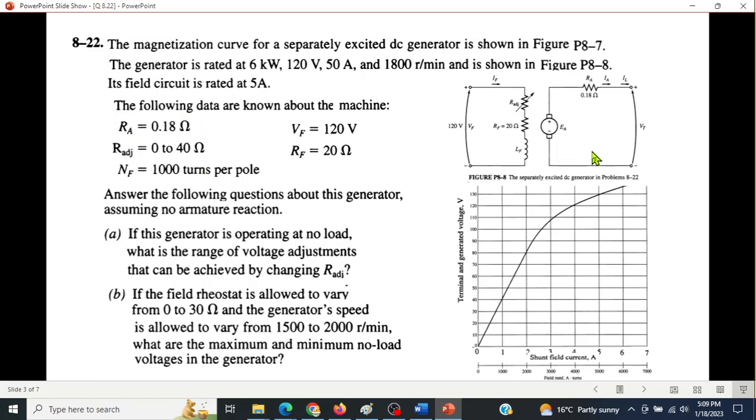Field current is given, and these are some of the parameters. Important parameter is the R adjustments. So R adjustments range is from 0 to 40, and we have to find these two answers.